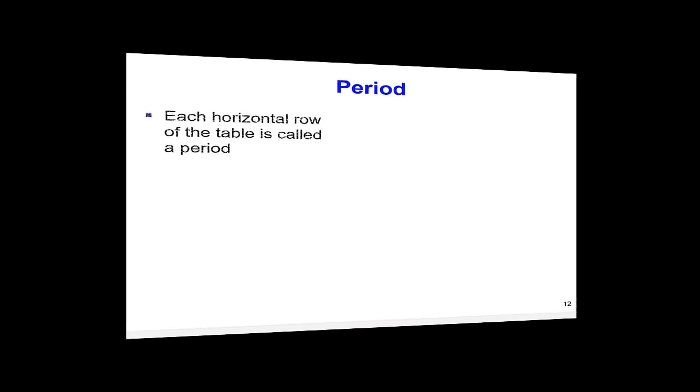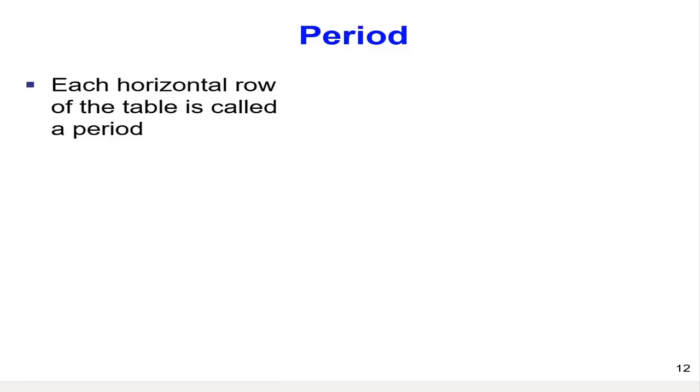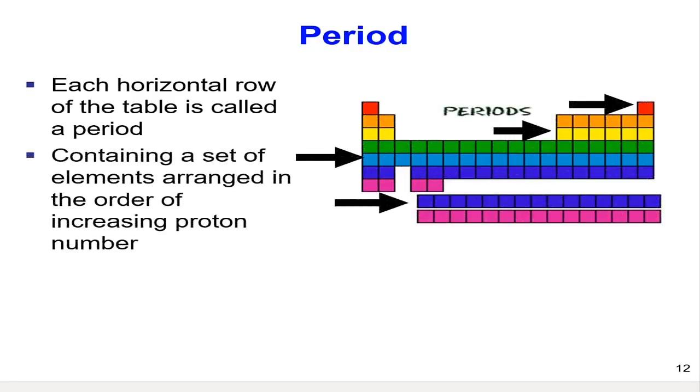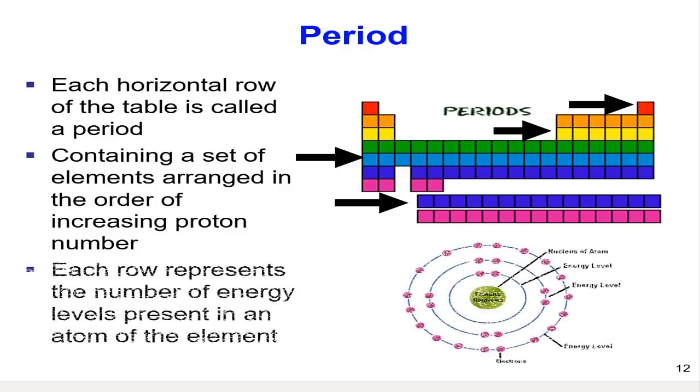There are seven horizontal rows in a periodic table and these rows are called period. Each period contains a set of elements that are arranged in the order of increasing proton number. Each period represents the number of energy levels present in an atom of the element.